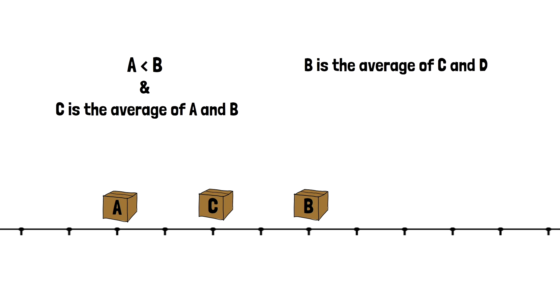Also, we know that B is the average of C and D. If you take a look at our chart line, you can see that we already have B and C on their places. So D should be placed on the same distance from B on the other side.